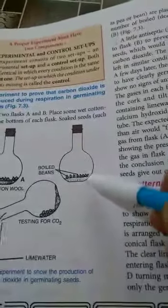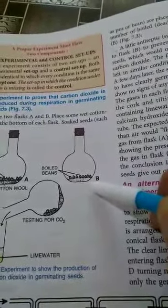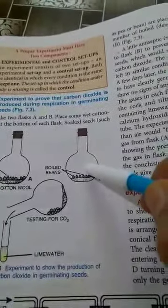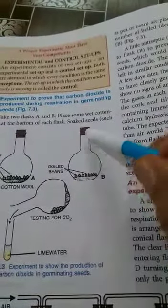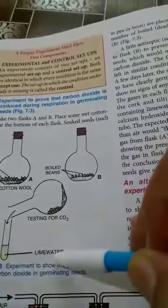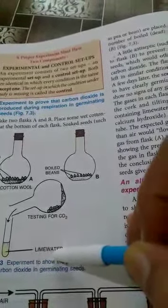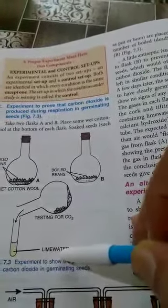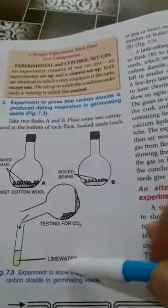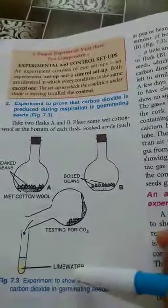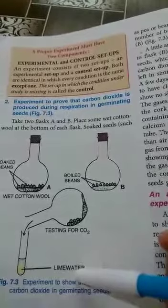While in test tube B we have taken dead seeds or boiled seeds. So they will not respire and produce carbon dioxide. When you tilt this jar over the test tube containing lime water there will be no change in the color of lime water. This experiment proves that carbon dioxide is produced during respiration of germinating seeds.